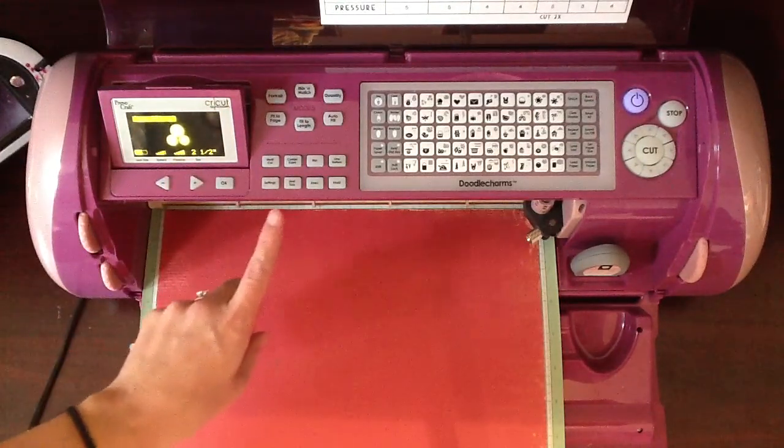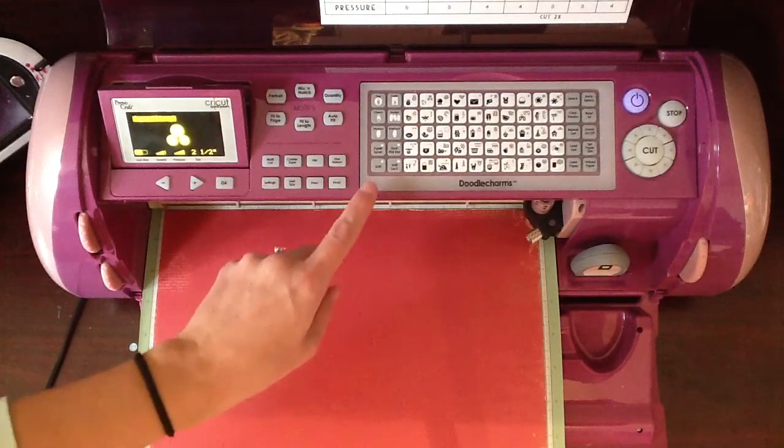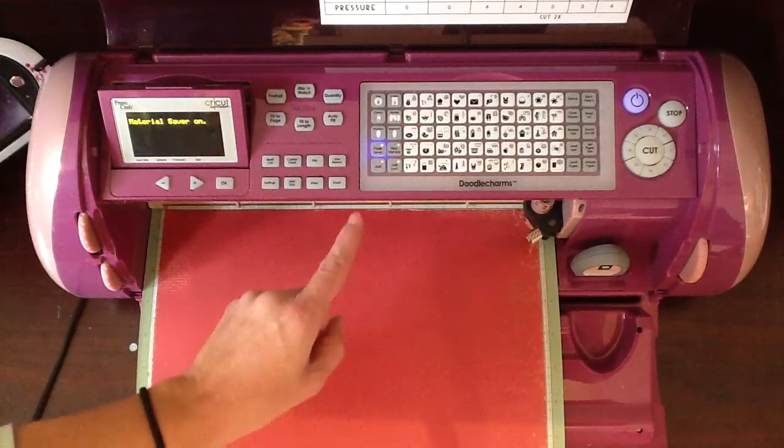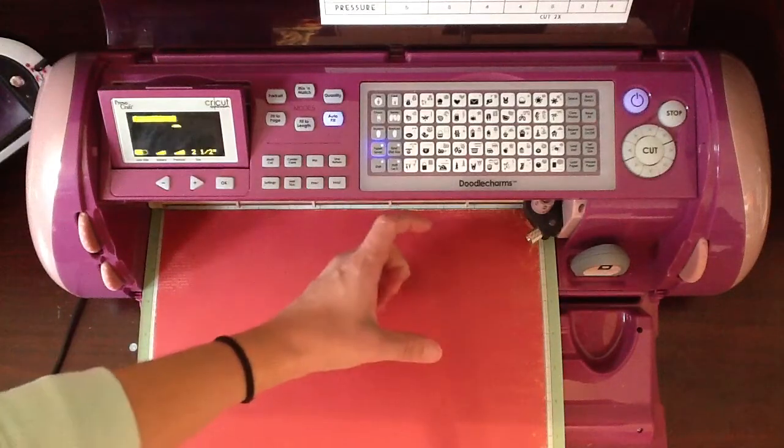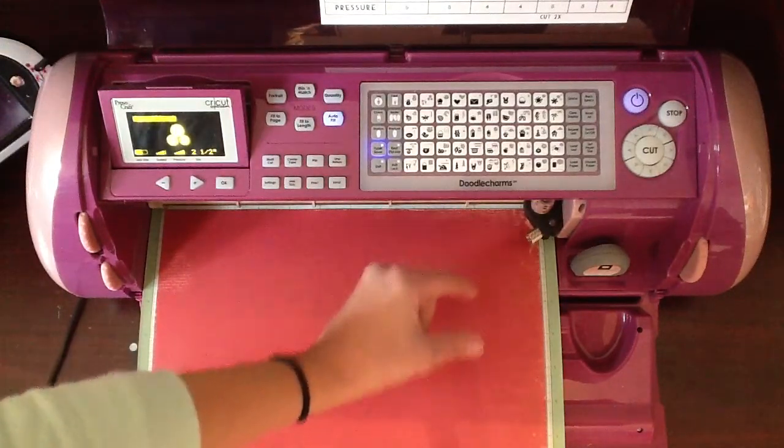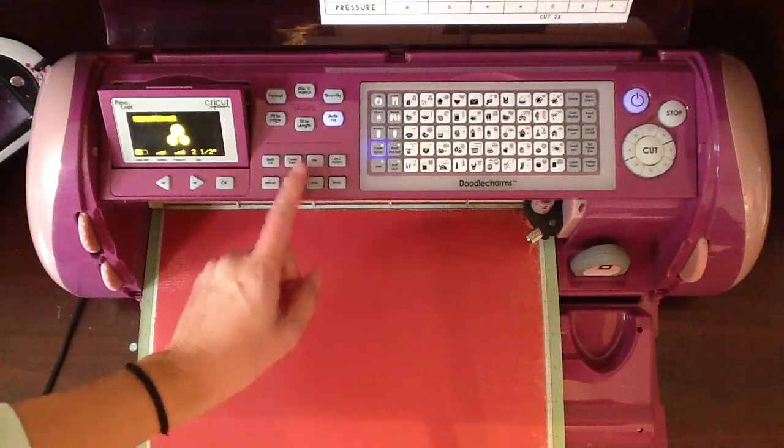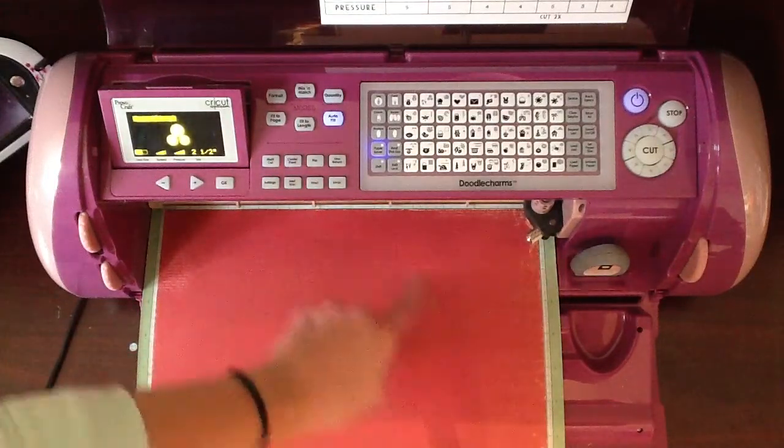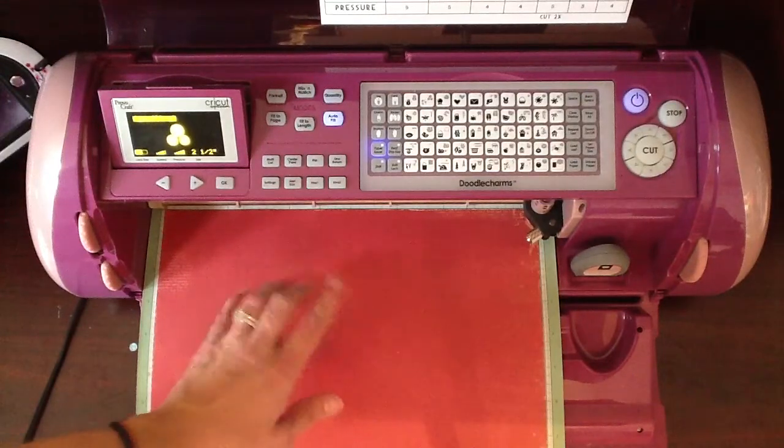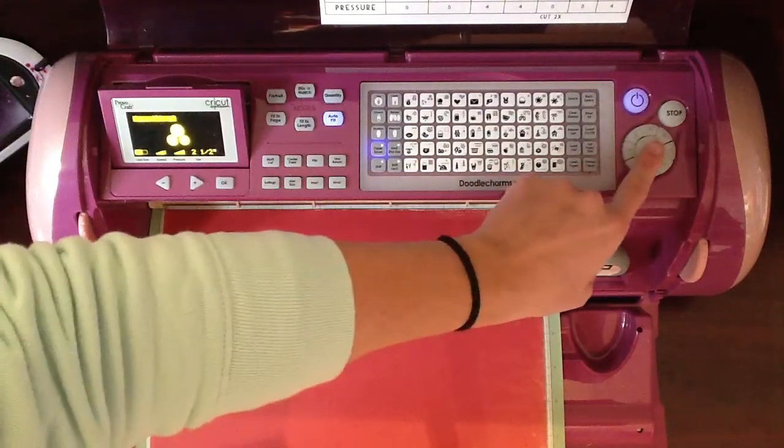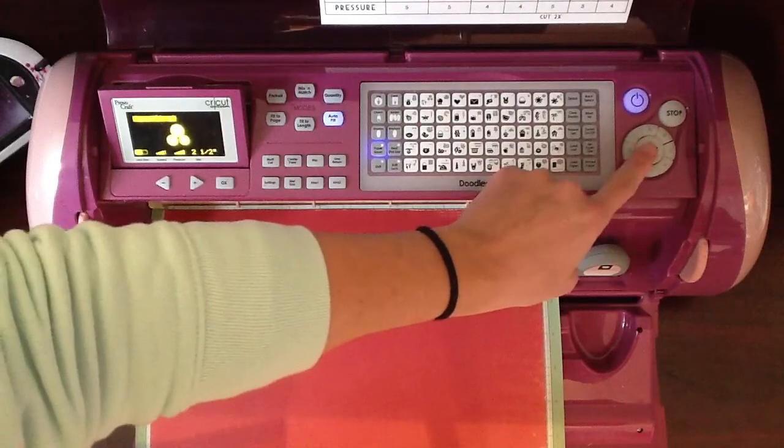And what I'm going to do is I'm going to hit paper saver, and then I'm going to hit autofill. Paper saver will make all the images cut very close together and save my paper. And the autofill, my machine knows I have a 12 by 12 on here, and it will fill it full of my cuts. So that's exactly what I want to happen. I want to get the most bang for my buck out of this sheet of paper.